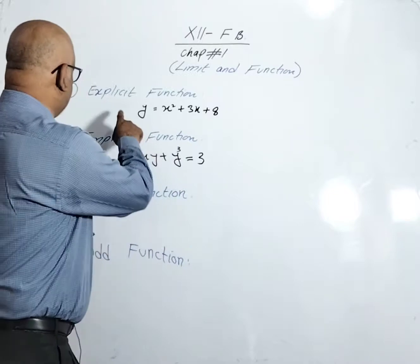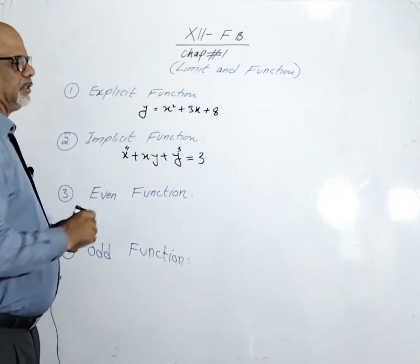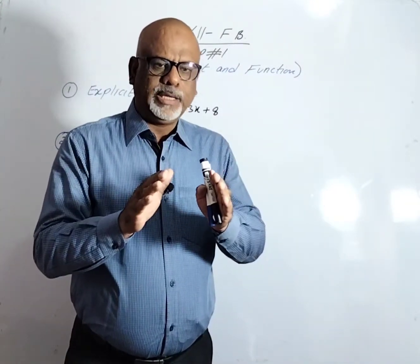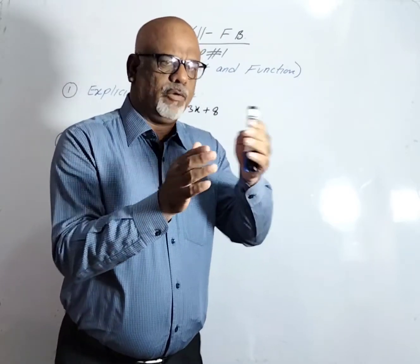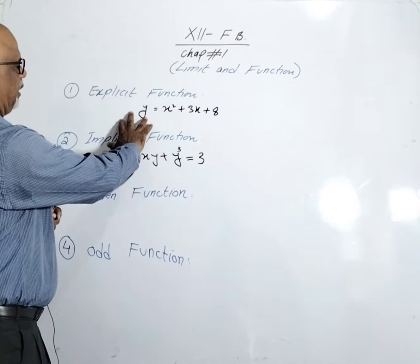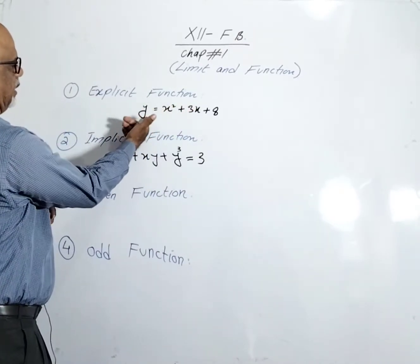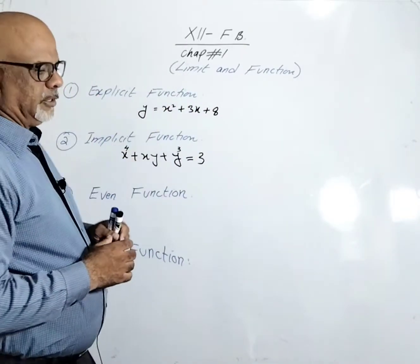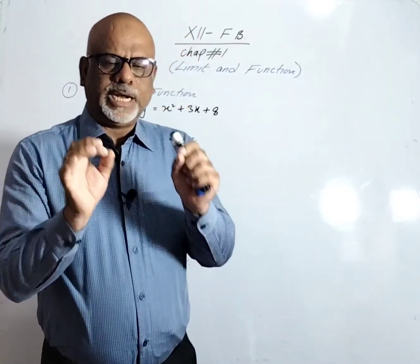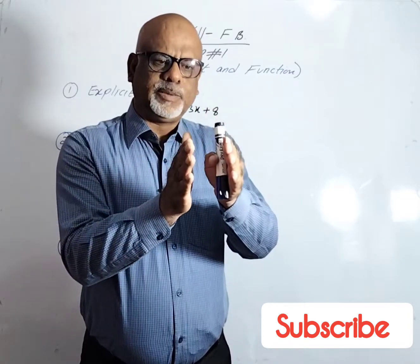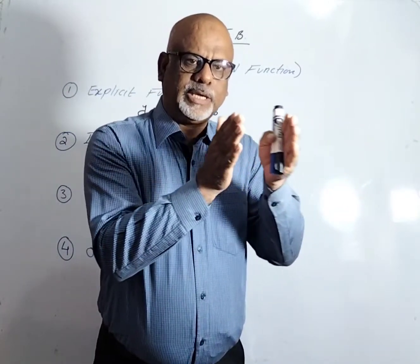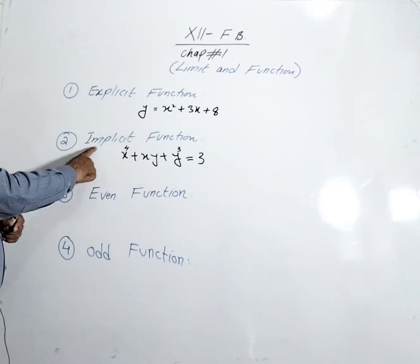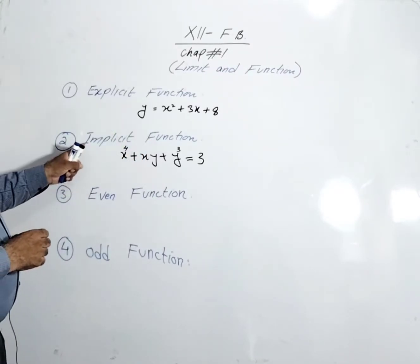The first function is the explicit function. An explicit function is that function in which y can easily be expressed in terms of x — that is, y can be separated and written in the form of x. For example, y = x² + 3x + 8 is an explicit function, where y is clearly expressed in the form of x.